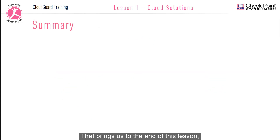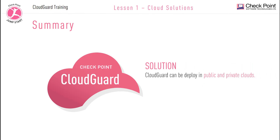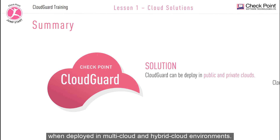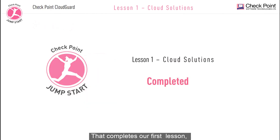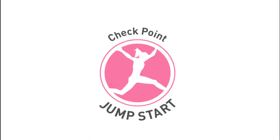That brings us to the end of this lesson. In lesson one, we discussed that CloudGuard can be deployed in both the public and private clouds, and that most customers need a solution that can be deployed in a public or private cloud and easily managed in multi-cloud and hybrid cloud environments. CloudGuard private and public cloud network security is such a solution. In the next lesson, we will discuss different CloudGuard components. I'll see you there.